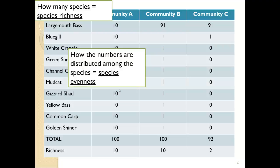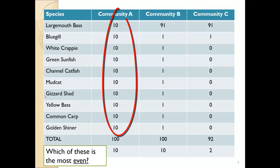This is a different concept that we call species evenness — how the numbers are distributed among the species. If they're evenly distributed, like in community A, that shows higher diversity. In community B, most of the individuals are in one species and we only have a single individual in the remaining species. That's low diversity. Community A is more even.